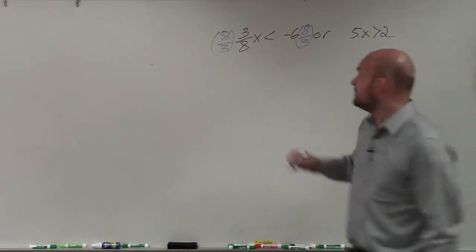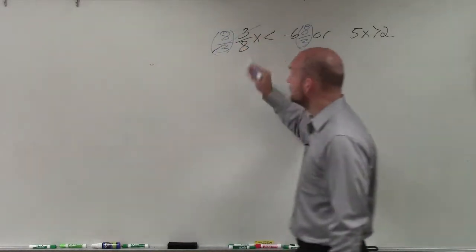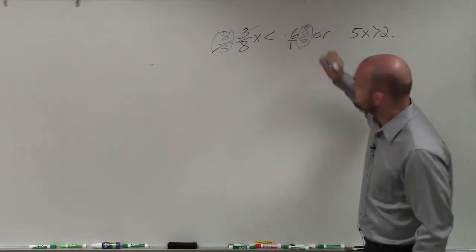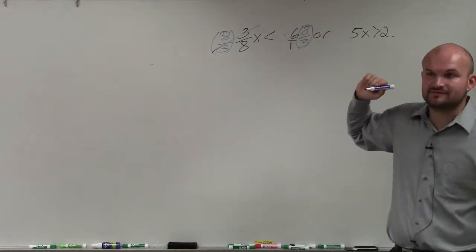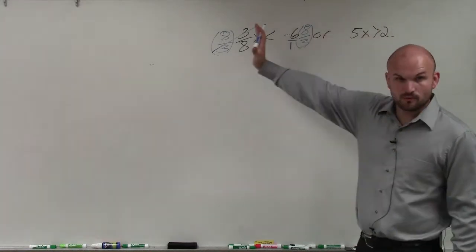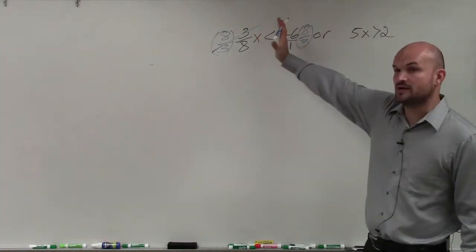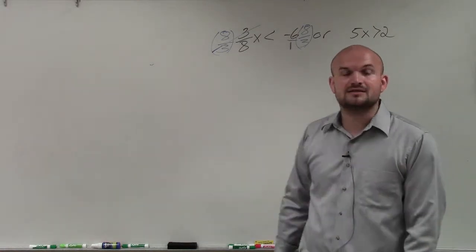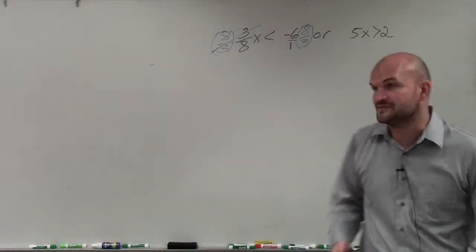Any time you take a number multiplied by its reciprocal, it's going to go to 1. 1 times x is just x. Over here, I rewrite this negative 6 as a fraction. So I write it as negative 6 over 1. And as you guys remember, when we multiply fractions, we just multiply directly across. Negative 6 times 8 is going to be negative 48. Divided by 3 will be negative 16.